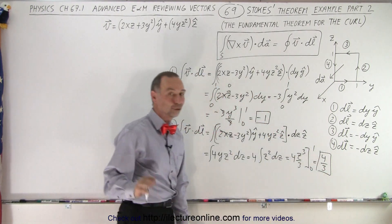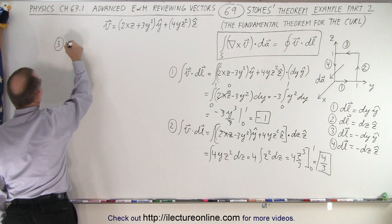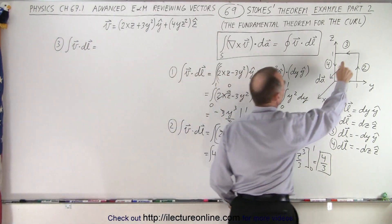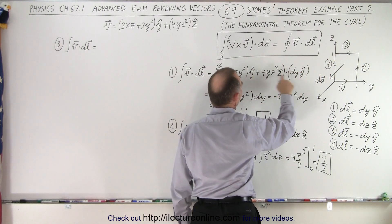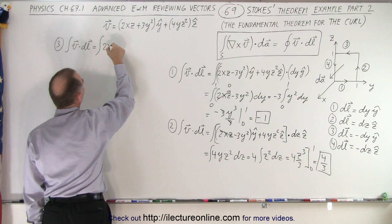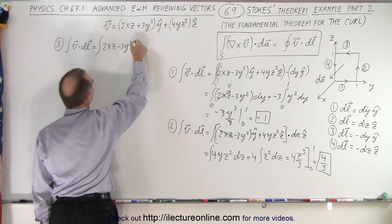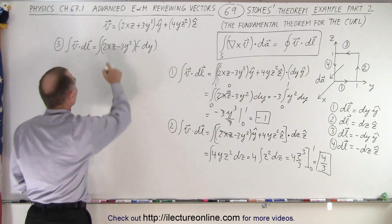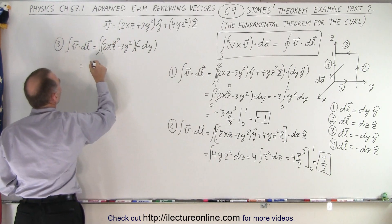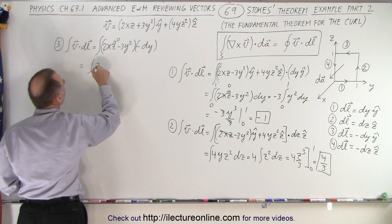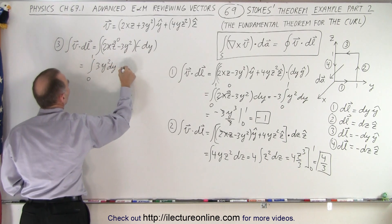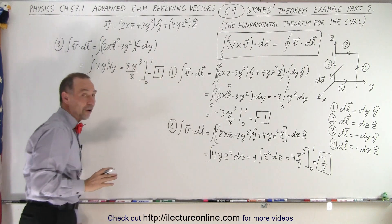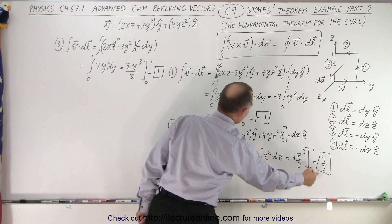So far we have negative one and four thirds, with two more paths to go. For path number three, the integral of V dot DL: only the y component survives, giving the integral of 2XZ minus 3Y squared times negative DY. Again X equals 0, so that term disappears. We get a negative times a negative, giving a positive integral of 3Y squared DY from 0 to 1, which equals 3Y cubed over 3 from 0 to 1. The threes cancel, giving positive 1. So far: path one is negative one, path two is four thirds, path three is positive one.